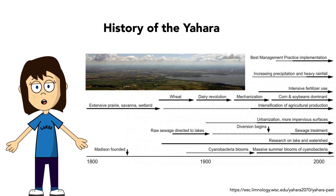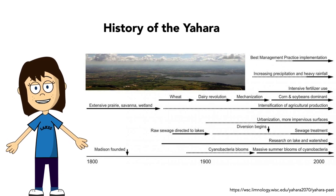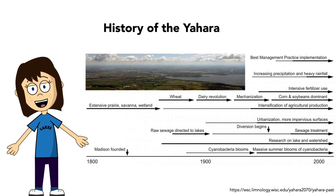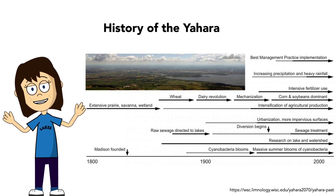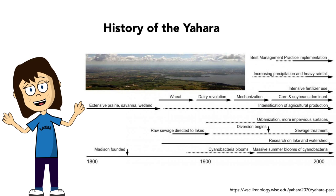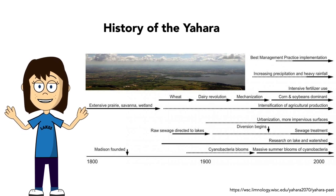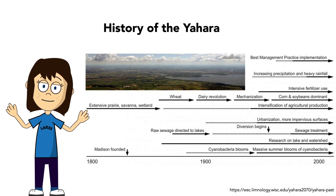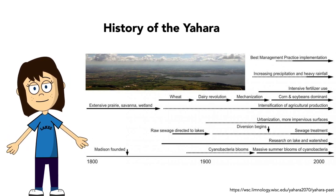When Euro-American settlers arrived with fur traders in the 17th century, trade, disease, and conflict dramatically altered Ho-Chunk society and they were forcibly removed from the region. Permanent settlement of Euro-Americans in the 1820s led to significant changes in the Yahara watershed. By 1880, settlers had converted about 75% of the native prairie and oak savanna landscape to cropland and pasture. Today's percentage is actually lower, since urban land use has replaced some former cropland.